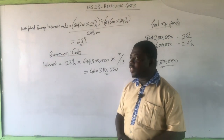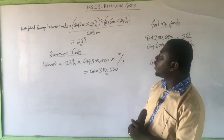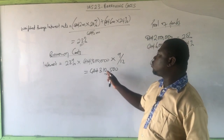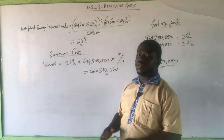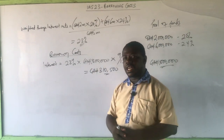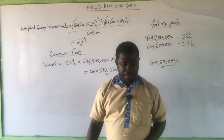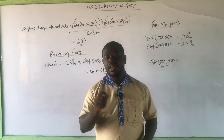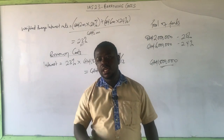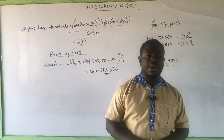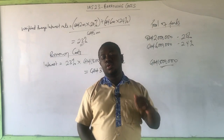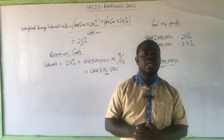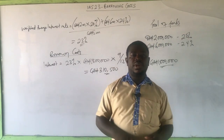The general borrowing calculations are just like those of specific funds — the only difference is that the money was not borrowed specifically to construct the asset. This brings us to the end of part three of our study on borrowing costs. We are going to look at the final parts: the commencement provisions, the suspension provisions, the cessation provisions, and the disclosures.